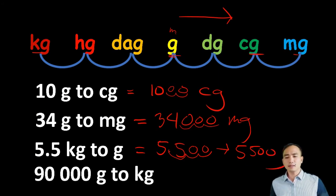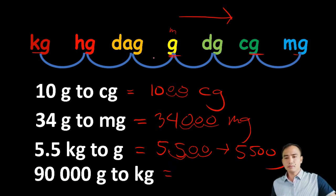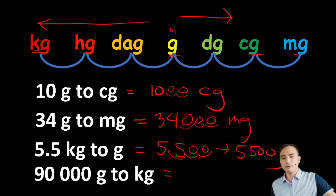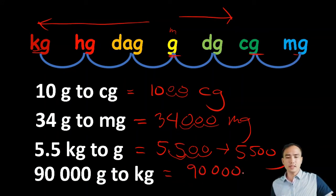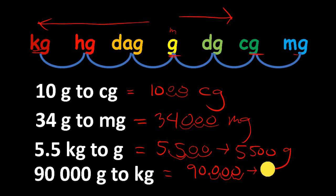Next: 90,000 grams to kilogram. From grams going to kilogram is going to the left, three places. Starting with 90,000, the decimal point is on the right, so we move it three places to the left. Therefore, the answer is 90 kilograms.